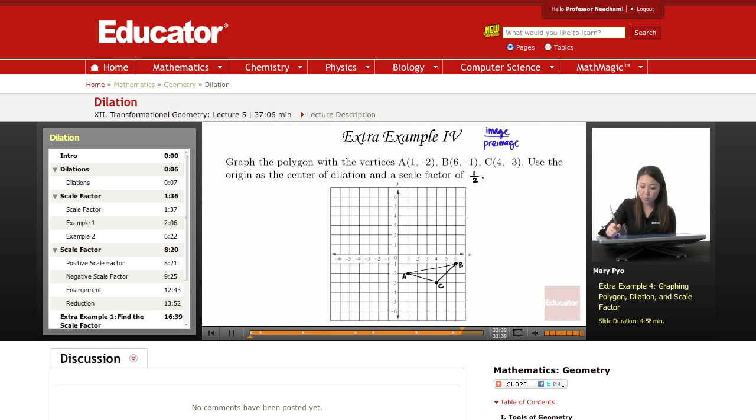I'm going to use P for my center, P. So what I can do is, for the image, P, A prime, P, B prime, P, C prime, all for the image.